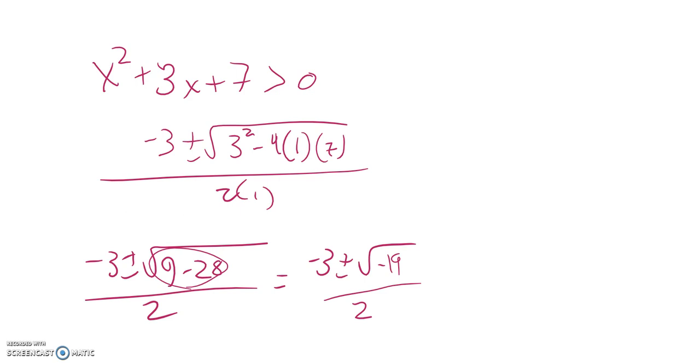If I think about that, that means that this doesn't have any x-intercepts. In other words, it's a parabola. I'm not sure where it's at, but it goes like this and goes up and never touches the x-axis. So it looks like this is actually always greater than zero.